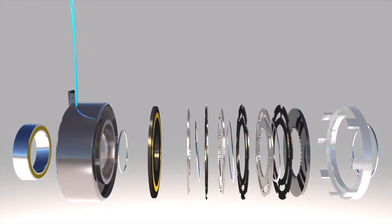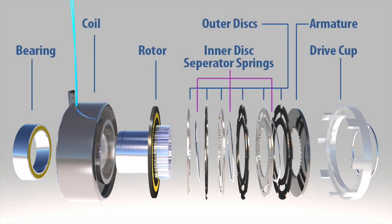The key components in a multiple disc clutch are the bearing, coil, rotor, inner discs, separator springs, outer discs, armature, and drive cup.